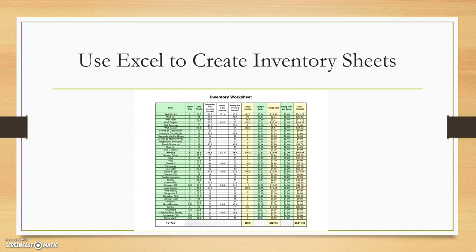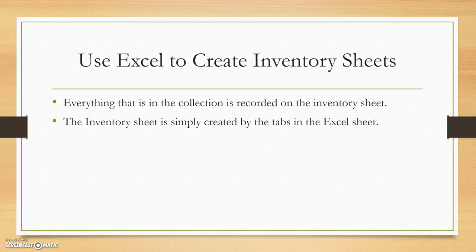Our inventory sheet is also created in Excel — we don't have to retype everything, it's all done automatically once we've entered everything initially. The inventory is a fairly quick and easy thing to do. It includes everything that's in the collection: the pictures, the interview itself — every item. It's a document that tracks and shows everything that's in the collection, so it's very important that it accurately reflects what's in the Excel sheet and in that veteran's collection.